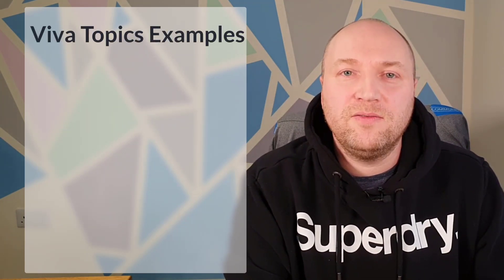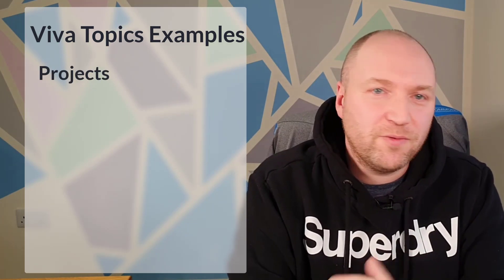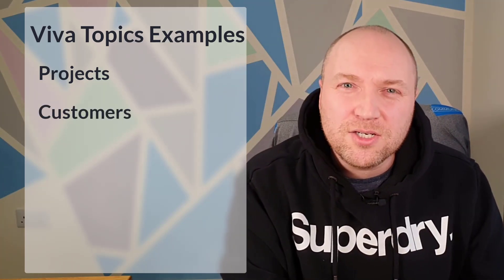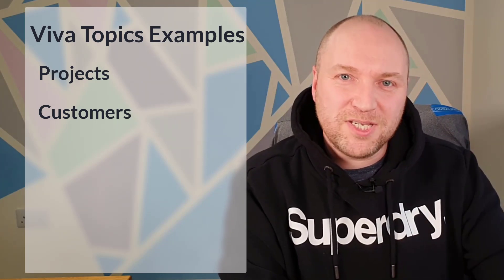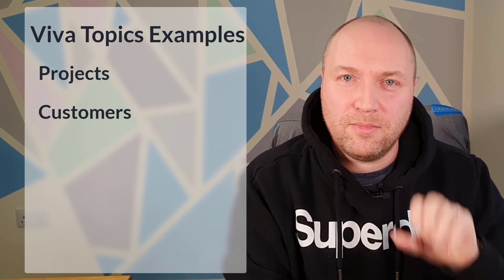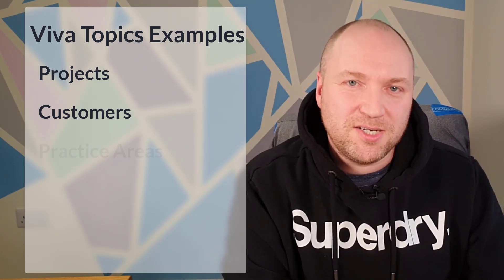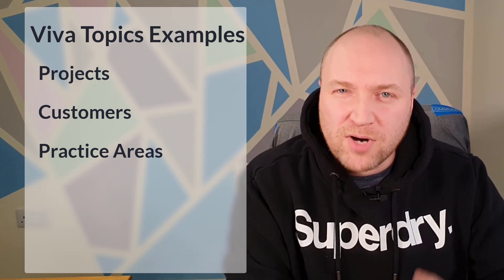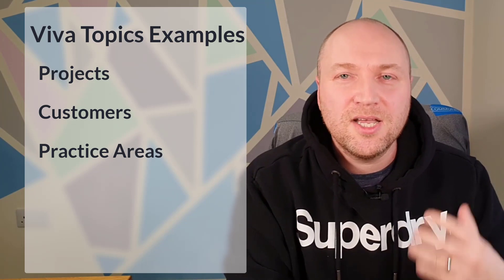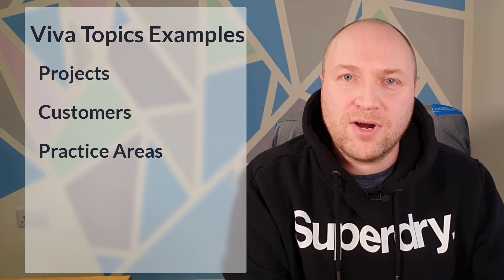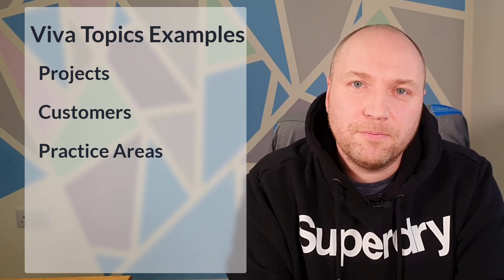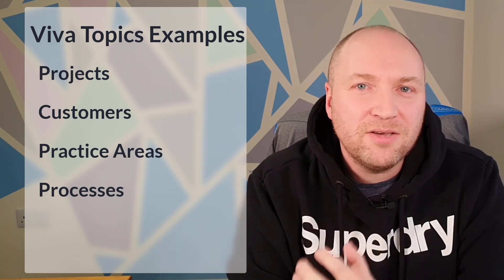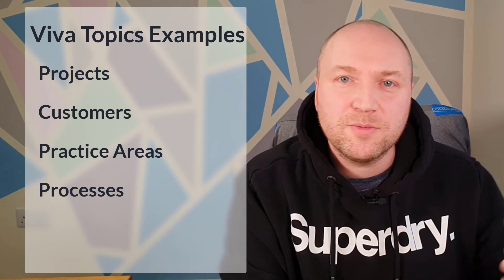Here are five examples of where you'd use Viva Topics. First, projects — internal initiatives or external customer projects. Or customers: everything about a customer, the interactions with them, the projects you've worked on with them, all in one place. Or practice areas — specializations in the business. A big issue many businesses face is breaking down the doors between different areas of subject matter expertise and sharing information. Or processes: key business processes like HR onboarding, sales processes, manufacturing processes repeated across different projects or customers.